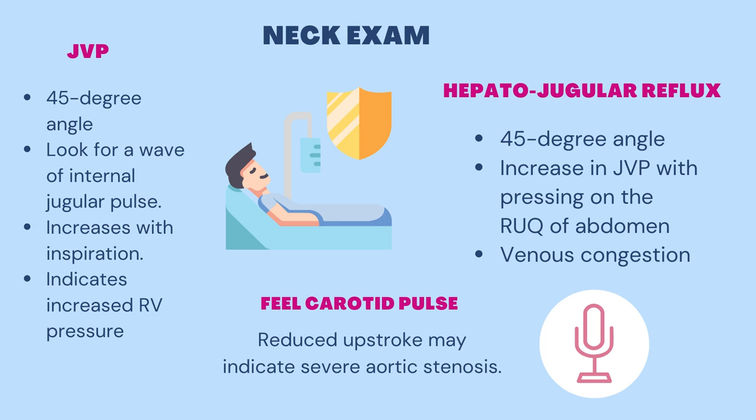Also, hold pressure to the right upper quadrant of the abdomen for about 15 to 30 seconds and observe if this increases the height of the jugular pulse by more than 3 centimeters. This is called the hepatojugular reflux.